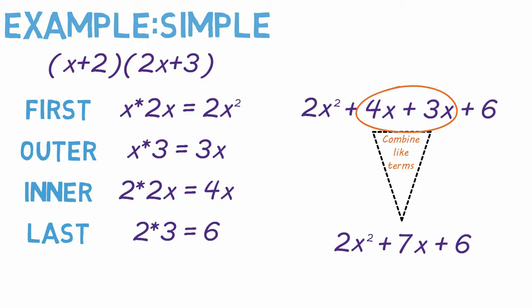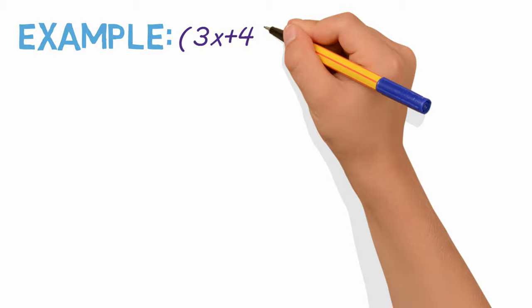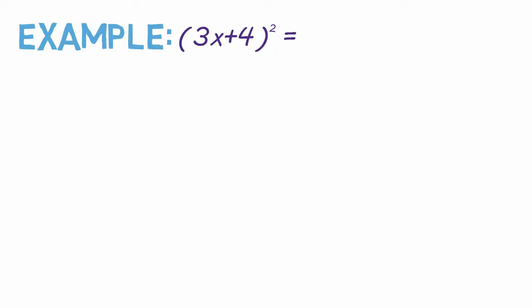But there are some tricky questions you may encounter. For example, if you're asked to solve the expression 3x plus 4 squared, what do you do? First you split the equation into two binomials. So 3x plus 4 times 3x plus 4. Then you just use the FOIL method.